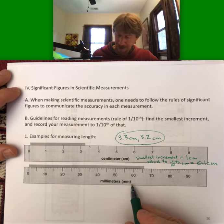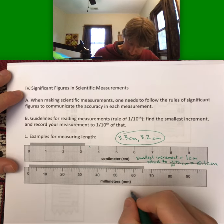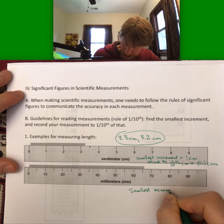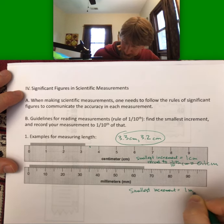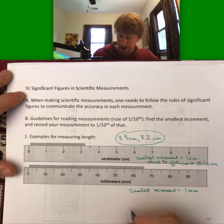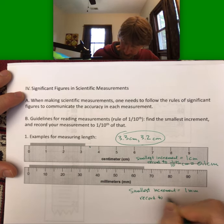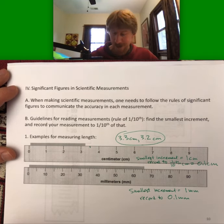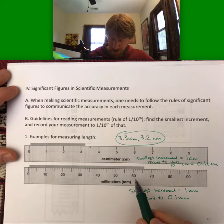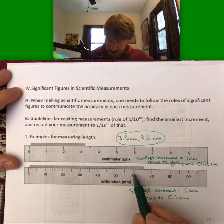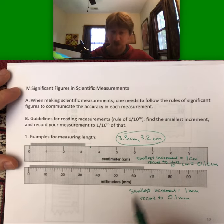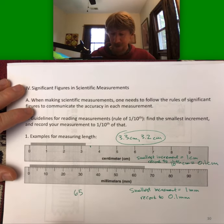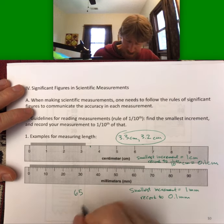Now, here, the smallest increment is one millimeter. So record to 0.1 millimeter. Now, again, we're going to record all the digits that we can see. So it's going to be 65. So it's between 65 and 66. So 65 millimeters for sure. But now we need a tenth place.